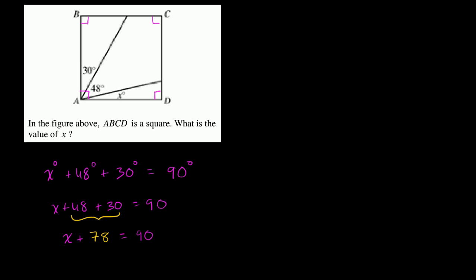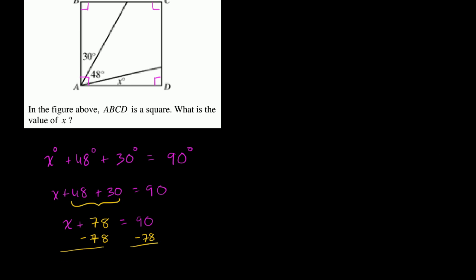And now we can just subtract 78 from both sides to solve for x. So minus 78, minus 78, and we are left with x is equal to 12.